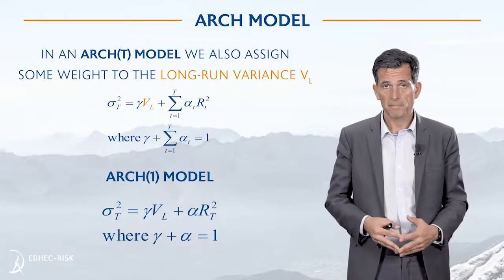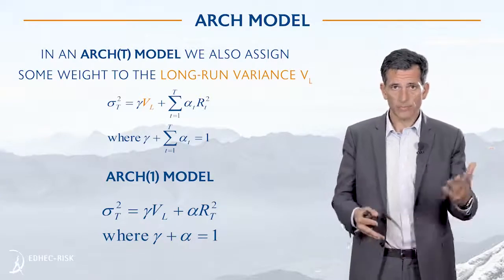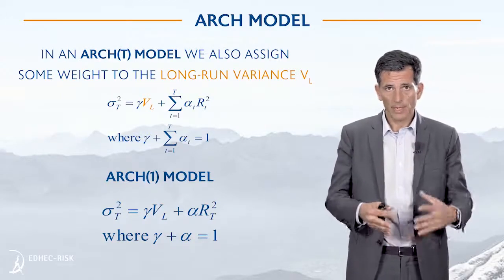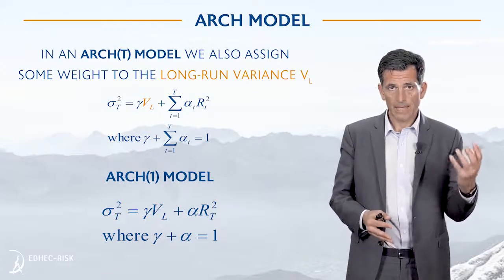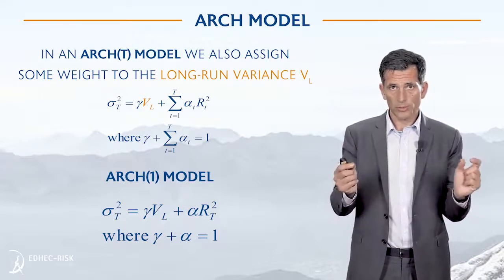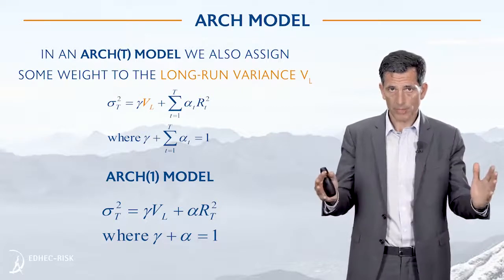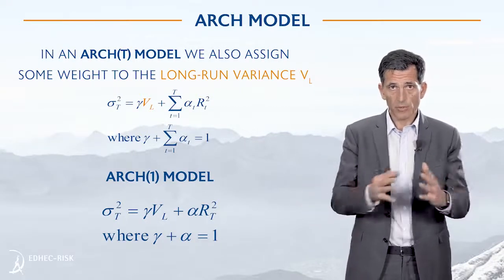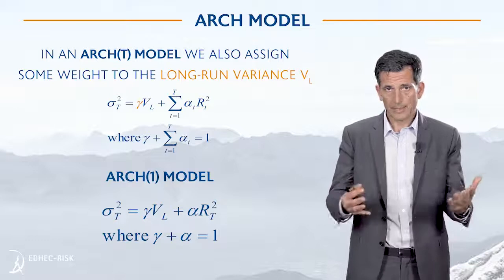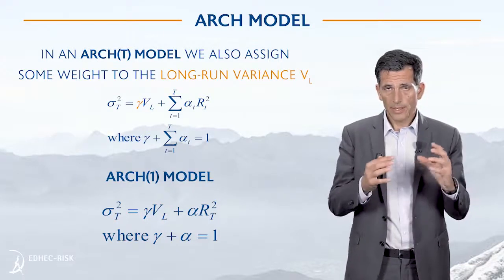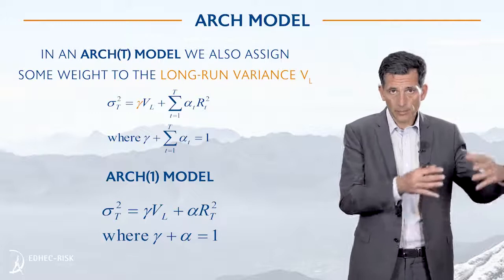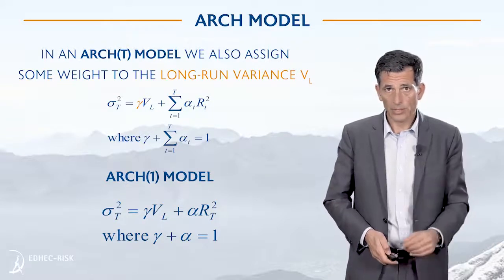Let's assume stock market volatility on the broad index is around 17 to 20%, so V_L equals roughly 20% squared, since we're looking at variance. What we're going to do is assign weights not only to the most recent and all sample observations, but also a weight gamma to this long-term average. This improves on the EWMA scheme by anchoring the value with respect to a long-term meaningful estimate. That's the ARCH model.